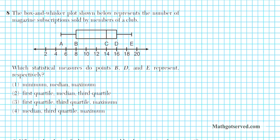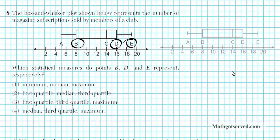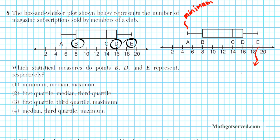Let's take a look at question number 8. A box and whisker plot represents the number of magazine subscriptions sold by members of a club. What statistical measures do points B and E represent? I'll copy the diagram and label what each letter means. In a box and whisker plot, the extreme left point is your minimum, and the other extreme is your maximum.